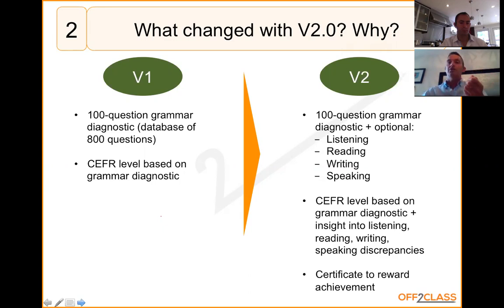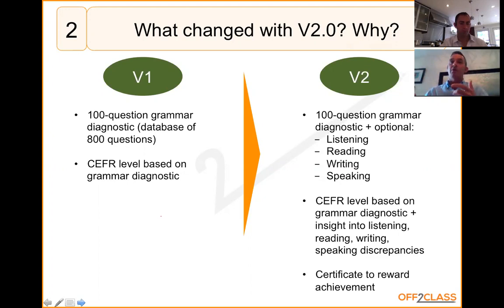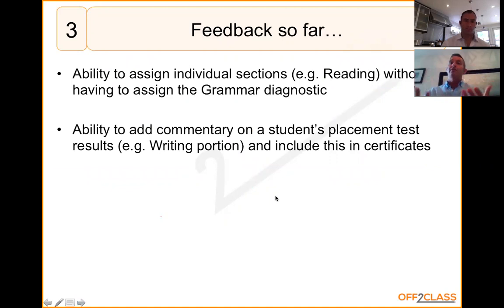We've also added, for version 2.0, the ability for Pro users to generate a certificate. Motivation is really important for English language learners, and certificates are a nice touch — especially with a new student, it gives them something tangible. If you reissue the placement test after around three or four months and the student has improved, you can generate another certificate as a visible sign of that improvement.